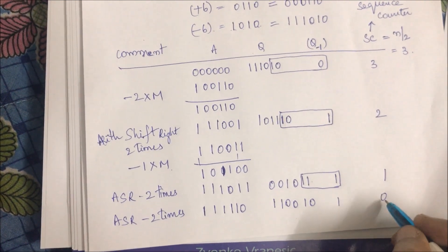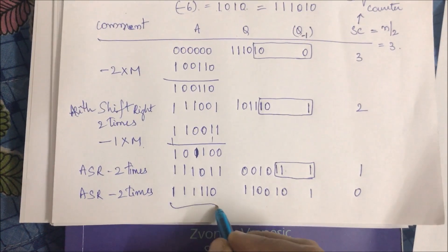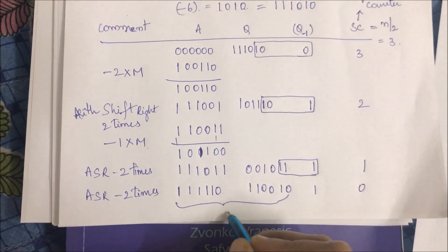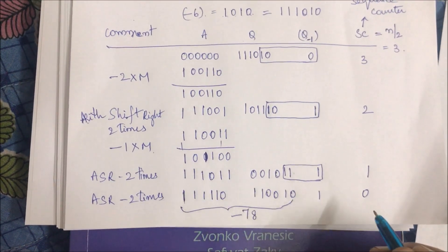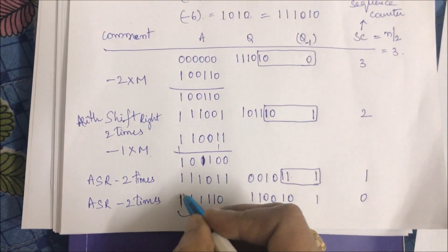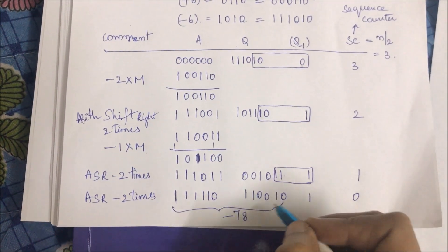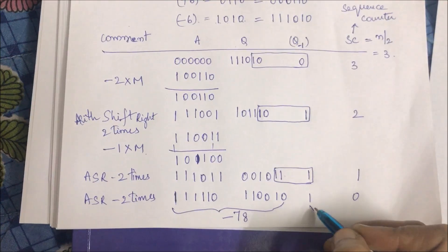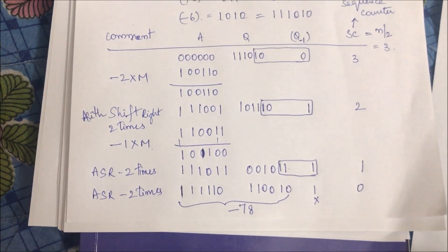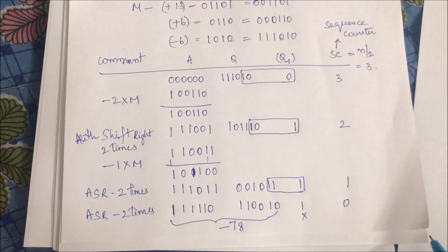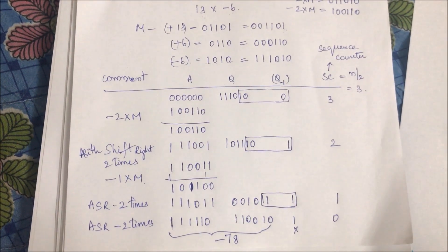Decrement the sequence counter to 0. When the sequence counter reaches 0, stop the process. Verifying the answer: the result equals -78. The leading 1 indicates it is a negative value. Take the two's complement of the complete value and you will get 78, confirming the answer -78. The extra bit should be ignored. This is the answer for +13 × -6.